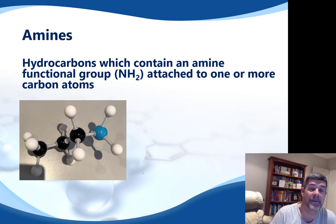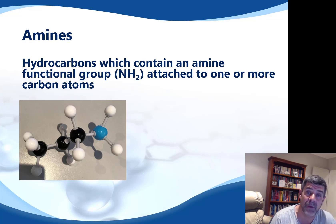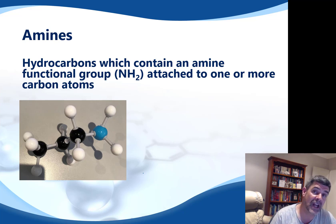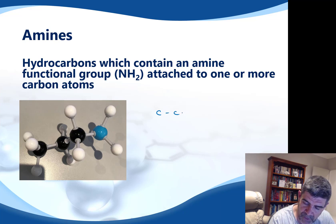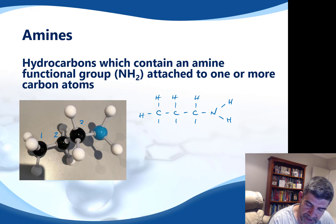The first thing we want to look at are the amines. These are hydrocarbons which contain an amine functional group, attached to one or more carbon atoms. Generally speaking, you will only need to deal with amine groups where there is one amine group and where there may be some side chains off that amine group. The one drawn here, if we transfer it into a structural formula, you can see NH2, and then two hydrogens, two hydrogens, and three hydrogens off the other carbons. So the one drawn here has three carbons altogether.